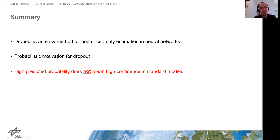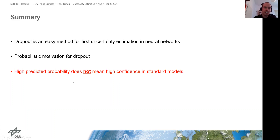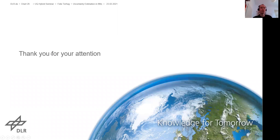And the most important point for people who work with neural networks: even though the outputs of neural networks look a lot like probabilities, they are not very well calibrated for standard models. So you cannot assume your model knows what it does not know, and you need some kind of safeguard for that. That was my talk.